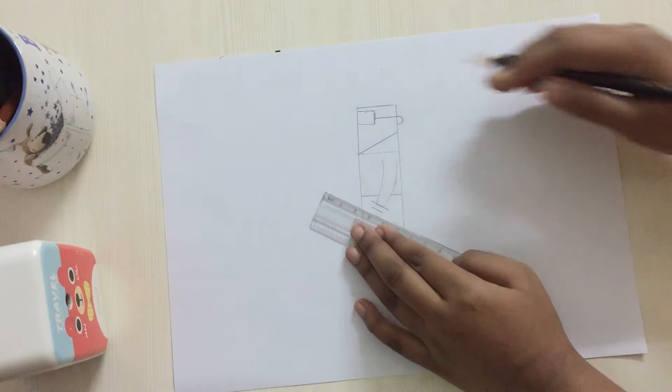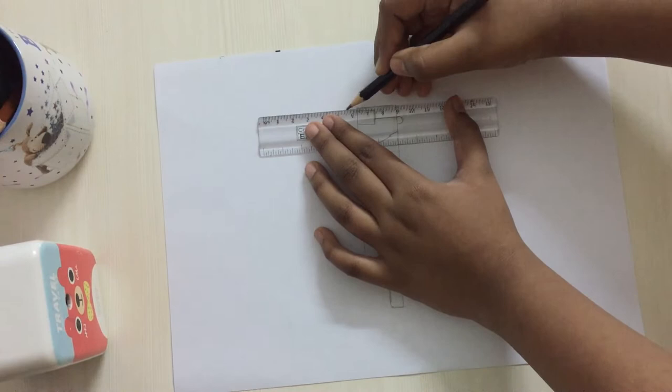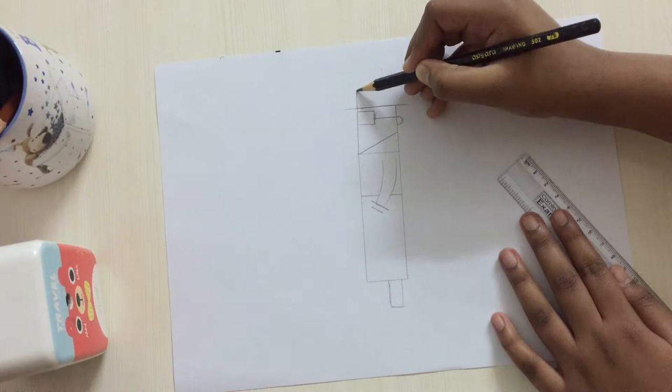Now let's draw his hat. Let's extend this line and draw two bumps like that.